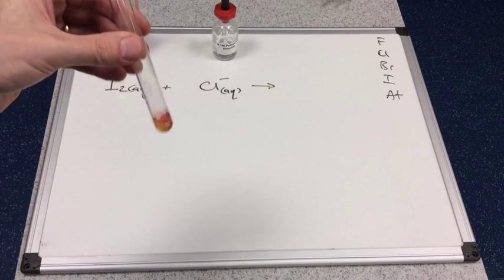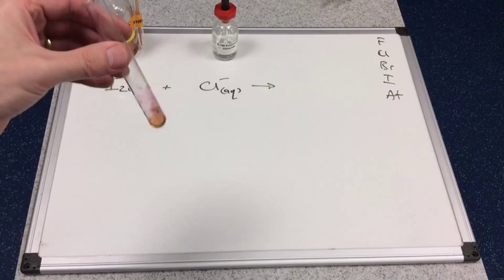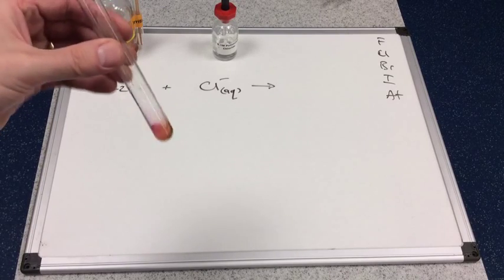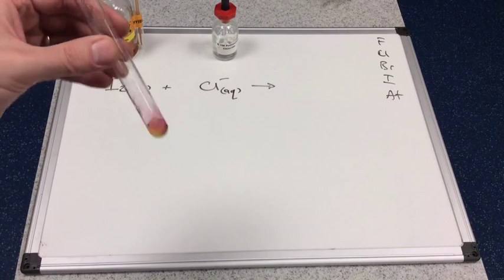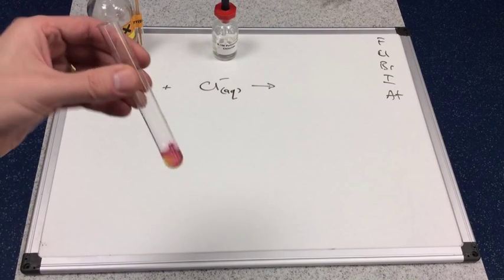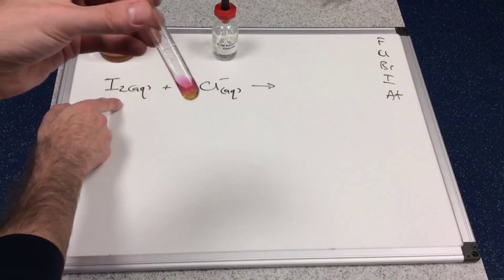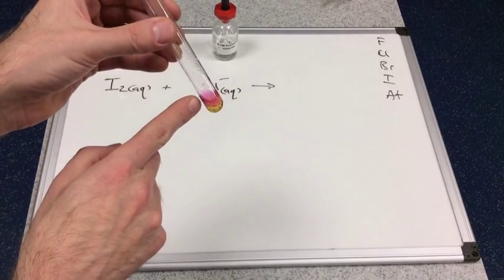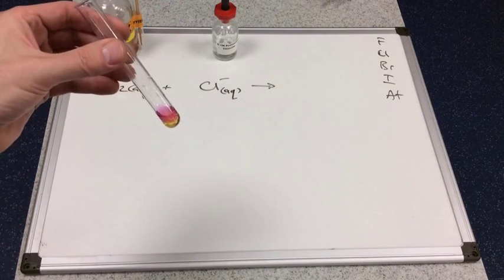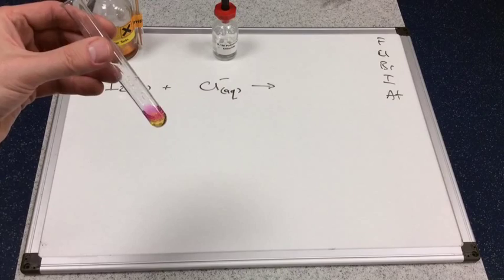And hopefully you can see the purple color is appearing, which is confirmation that we've got iodine, I2, in that test tube. We started with I2, we've still got I2, and so therefore there's been no reaction.